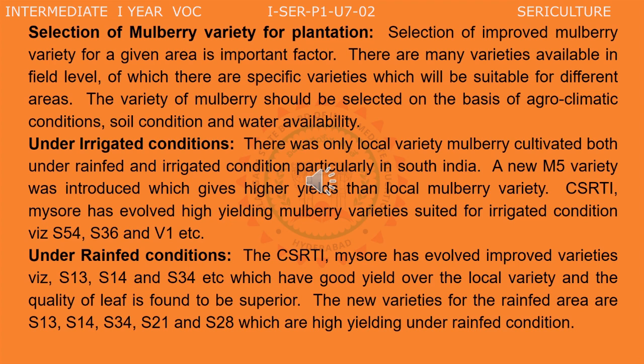Under rainfed conditions, the Central Sericulture Research and Training Institute, Mysore, has evolved improved varieties: S13, S14, and S34, which have good yield over the local variety and the quality of leaf is found to be superior. The new varieties for the rainfed area are S13, S14, S34, S21, and S28, which are high-yielding under rainfed conditions.